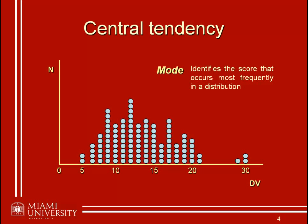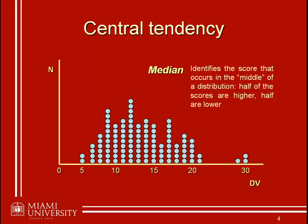Let's move on and think about our other measures of central tendency. How can we think about what the median represents in a distribution? The way you may have learned about the median is it's the 50th percentile, or the middle. The median is the score that occurs in the middle of the distribution. Half of the scores are higher, and half of the scores are lower.